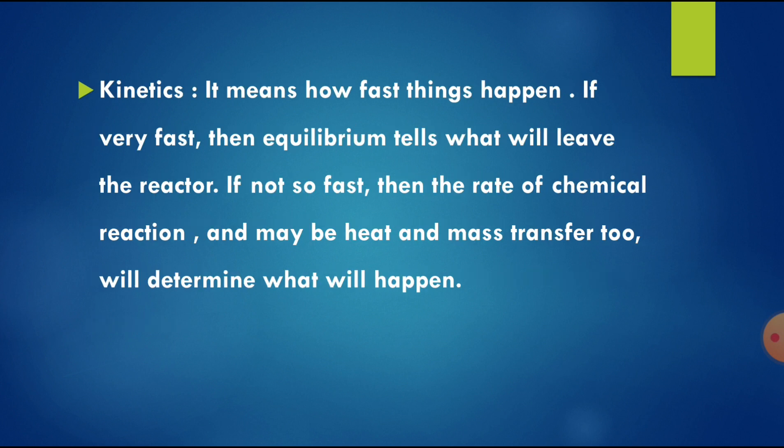Kinetics means how fast things will happen. If the reaction is very fast, then equilibrium tells what will leave the reactor. If it is not fast, then the rate of chemical reaction and also heat and mass transfer will determine what will happen in the reactor. That is the kinetics of the reactor.